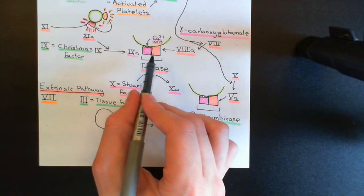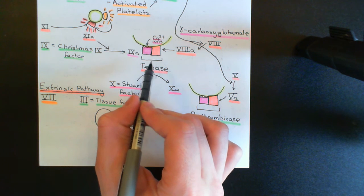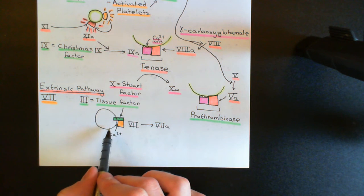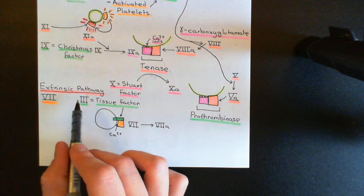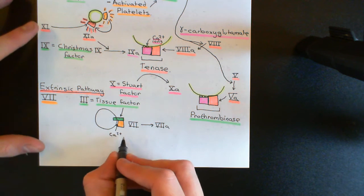And in fact, some people actually call this tenase that we had here the intrinsic tenase, the tenase of the intrinsic pathway. And they will call this complex that we've got here the tenase of the extrinsic pathway or the extrinsic tenase. But that's just terminology.